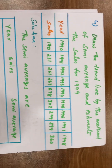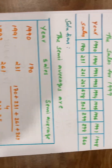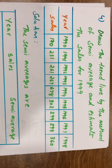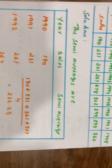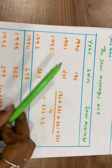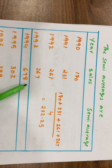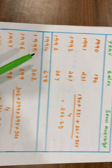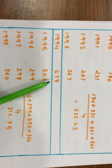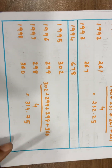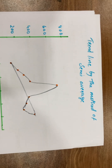For the semi-average method, draw the trend line and estimate sales for 1999. Create a table with years 1990, 1991, 1992, 1993, then add the sales and divide by 4. Add values for 1994, 1995, and 1996, then divide by 4. Then add 314 divided by 5 to get the trend line.